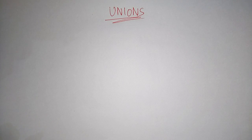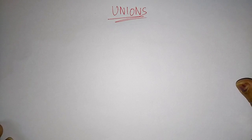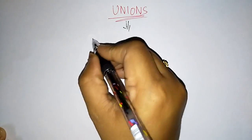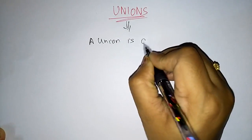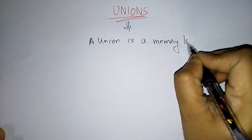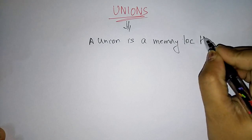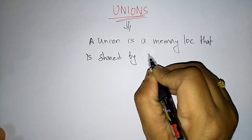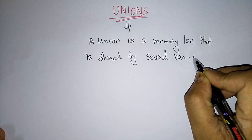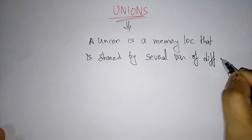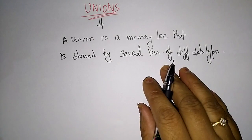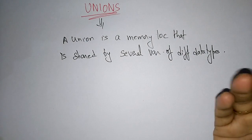Hi students, coming to the next topic in the subject, that is unions. In the previous video I explained about what is a structure, and now let us see what is a union. A union is a memory location that is shared by several variables of different data types.